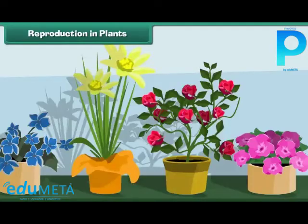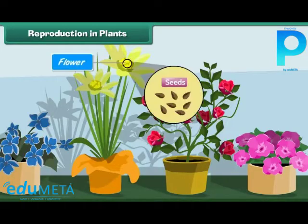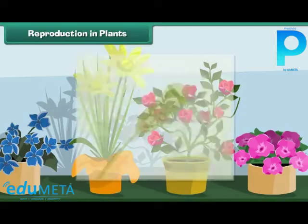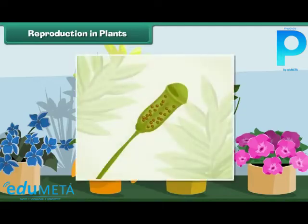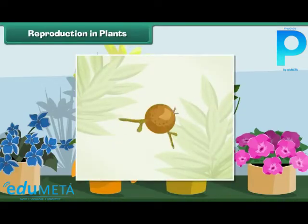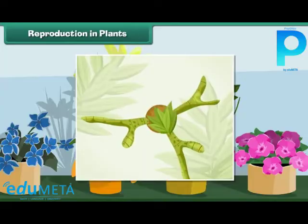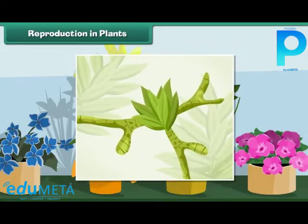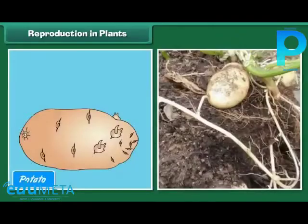Reproduction in Plants: Plants reproduce in different ways. Most of the flowering plants produce seeds. Some plants do not produce seeds — they produce spores which can grow into a new plant. Some plants can reproduce from their body parts.